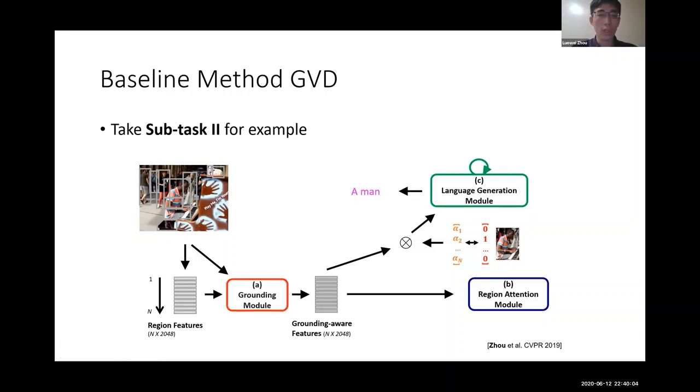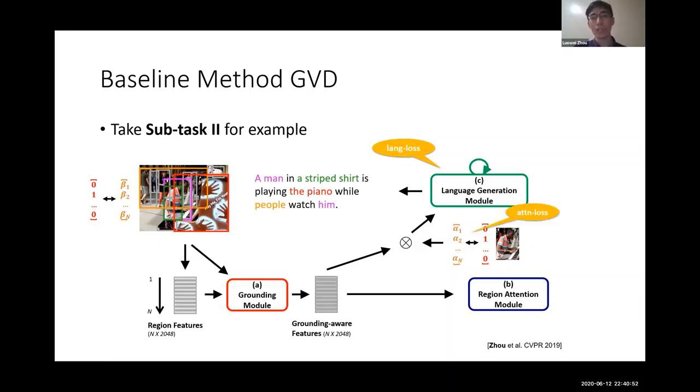Besides, we want to verify that the words we generated are actually in the image. So we don't want to have any hallucinating objects. And so again, we use the grounding module to locate a man back into the image. So here, we compute the similarity score between the embedded word embedding man and the refined features, so that we can localize where this word, this object, is. And we apply the same supervision to these weights. And we repeat the process until the end of the description. And the loss function consists of four parts. The first one is the standard language reconstruction loss. And the second one is on the attention weights. And similarly, we have that for the grounding weights. And the last one is a classification loss on the regions.